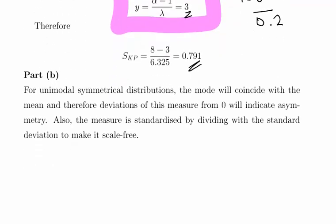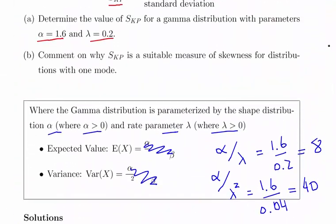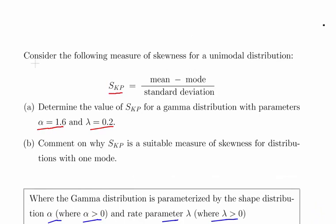For the second part: for unimodal symmetric distributions, the mode will coincide with the mean, and therefore deviations of this measure from zero will indicate asymmetry. Also, the measure is standardized by dividing by the standard deviation to make it scale-free. In summary, what we derived here was the mode of the gamma distribution and the skewness of the gamma distribution using the Pearson skewness coefficient.